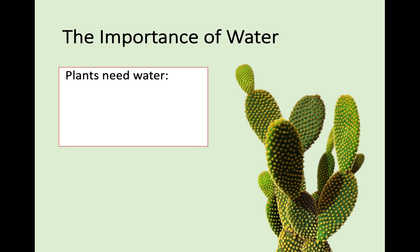First of all, plants need water - it's one of the crucial things they need, and there are three uses for water we need to know. Plants need water to maintain turgidity. When a plant cell swells up we call it turgid, and when all the plant cells are turgid it keeps the plant upright. If the plant didn't have any water, the first thing that happens is it wilts, because the cells are not turgid anymore and it cannot keep its structure properly.